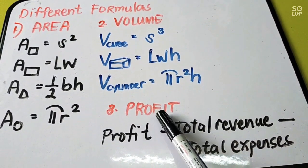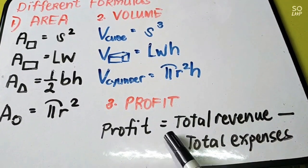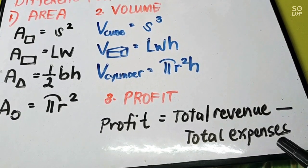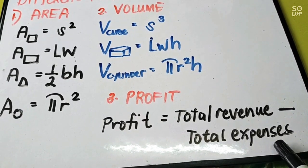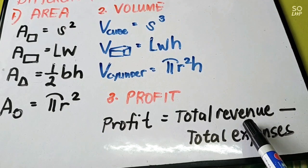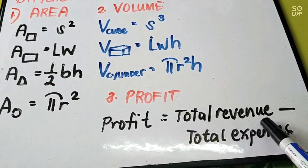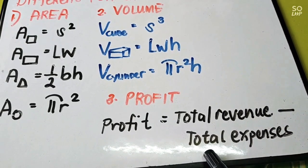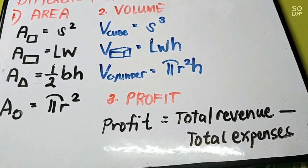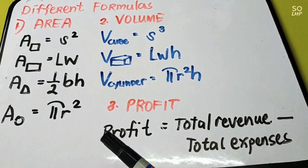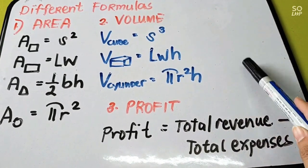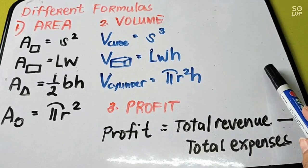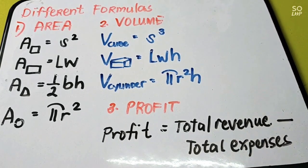We also have profit. Profit is equal to the total revenue minus the total expenses. Revenue means the total assets or sales, minus your expenses. That is equal to your profit. These are the formulas that we can apply in solving problems, depending on the problem.